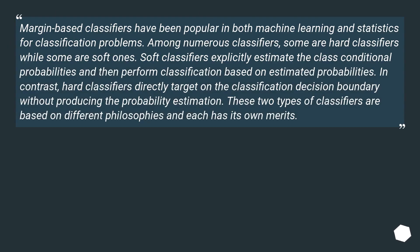Margin-based classifiers have been popular in both machine learning and statistics for classification problems. Among numerous classifiers, some are hard classifiers while some are soft ones. Soft classifiers explicitly estimate the class conditional probabilities and then perform classification based on estimated probabilities. In contrast, hard classifiers directly target the classification decision boundary without producing the probability estimation. These two types of classifiers are based on different philosophies and each has its own merits.